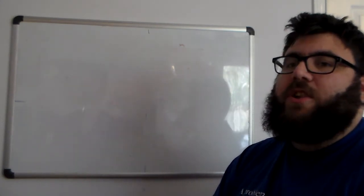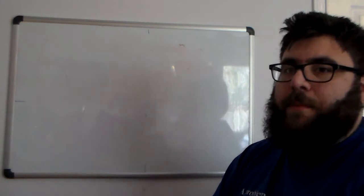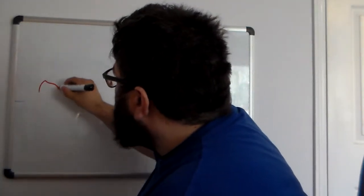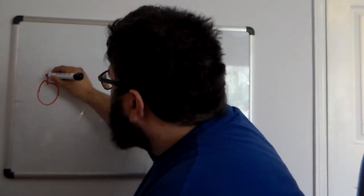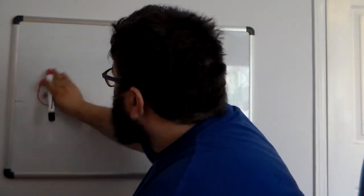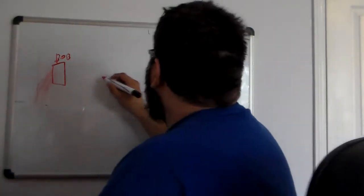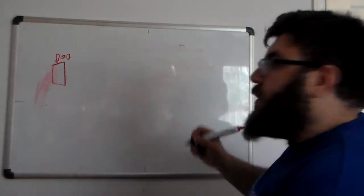So what happens when you go to google.ca? For example, here's your computer. Sorry for my bad drawing. So here is your computer and this is you, Bob.